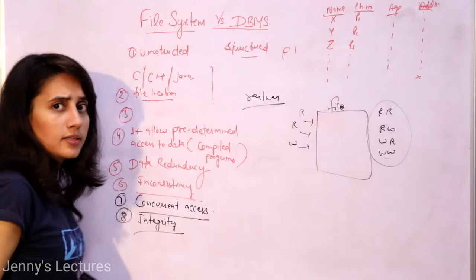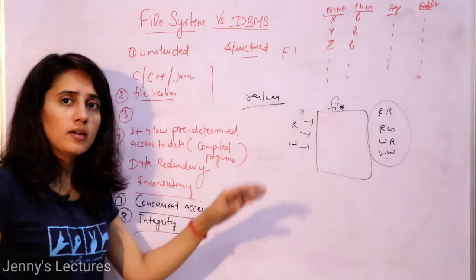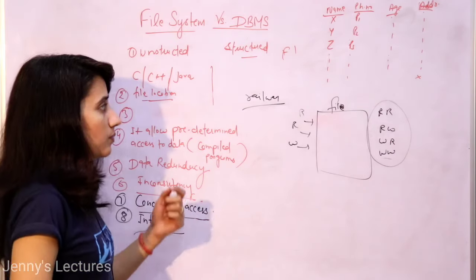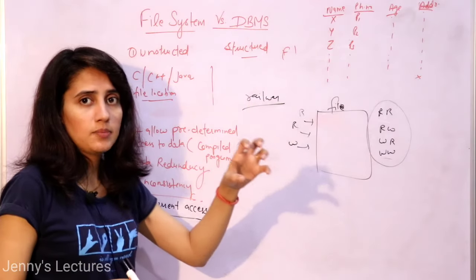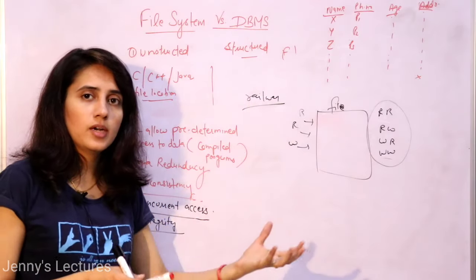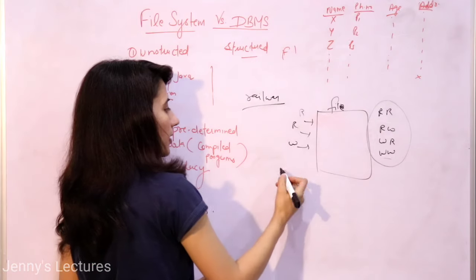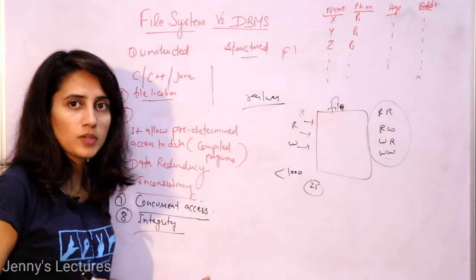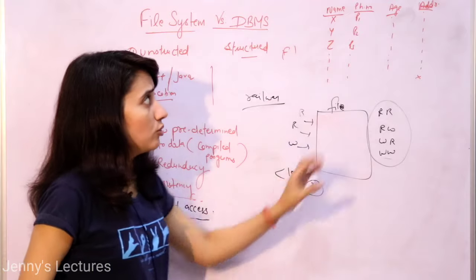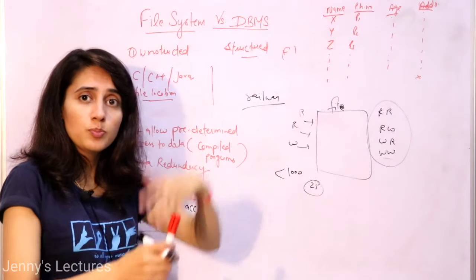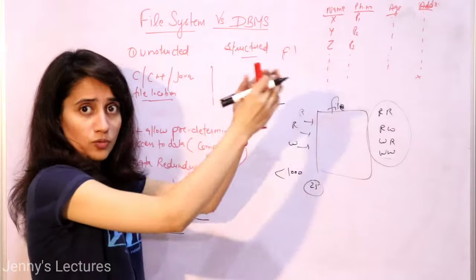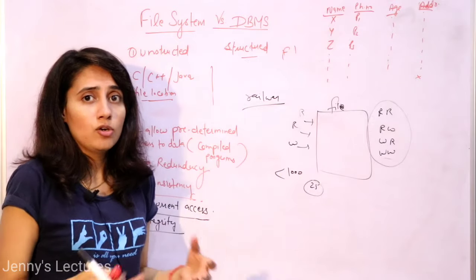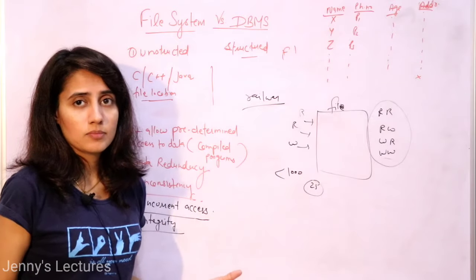Next point is integrity. In DBMS, you can add integrity constraints on the data. For example, in a banking system, you can add a constraint: if your bank balance goes below 1000, then 25 rupees will automatically be deducted. This kind of constraint can be applied in DBMS because the data is predefined and structured. In file system, the data is unstructured, so we cannot define such constraints.